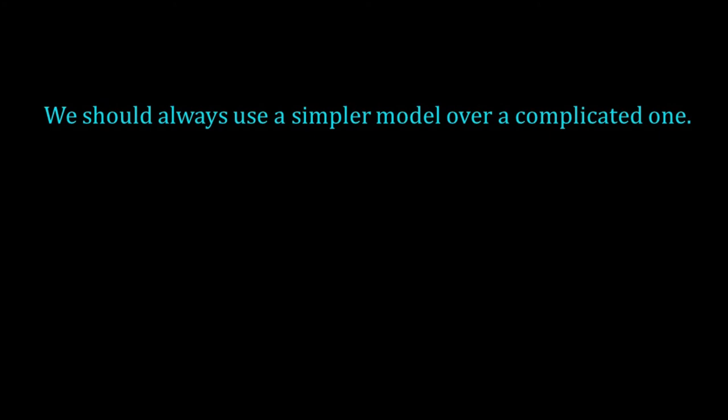Otherwise also, the general belief in science is that we should always use a simpler model over a complicated one. This idea is known as Occam's razor or parsimony. Suppose we have two models, both explaining a phenomenon. But one is simpler with lesser number of independent variables or predictors. Then as per the Occam's razor, choose the simpler model.